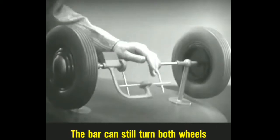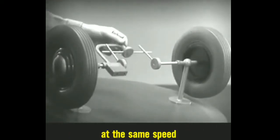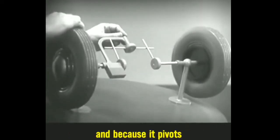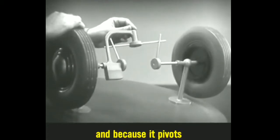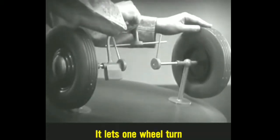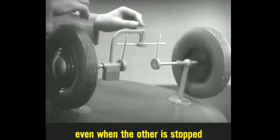Now, the bar can still turn both wheels at the same speed. And, because it pivots, it lets one wheel turn even when the other is stopped.